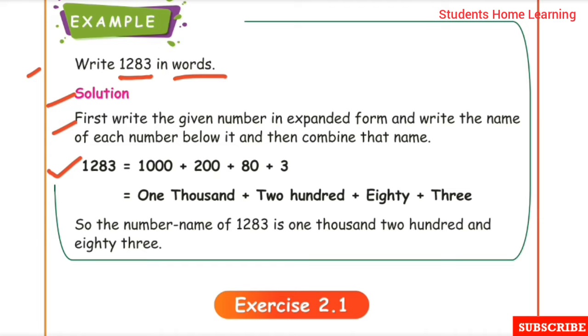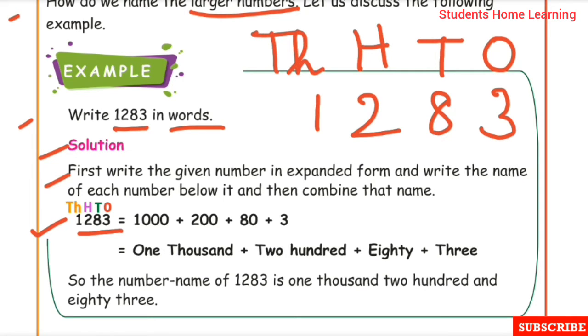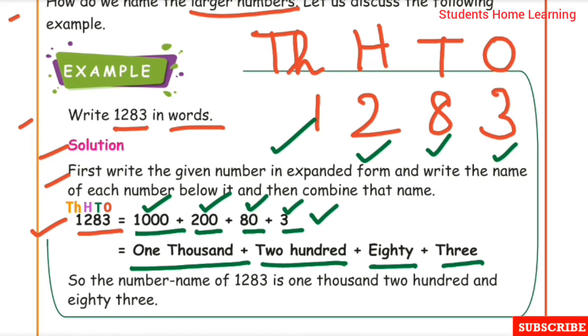Let's look at the place values. 1,283: 3 is in the ones place, 8 is in the tens place, 2 is in the hundreds place, 1 is in the thousands place. In expanded form: 1283 = 1000 + 200 + 80 + 3. The number name is one thousand plus two hundred plus eighty plus three. So the number name of 1283 is one thousand two hundred and eighty three.